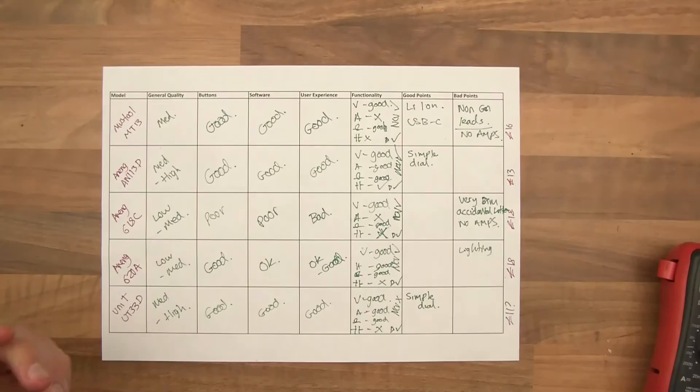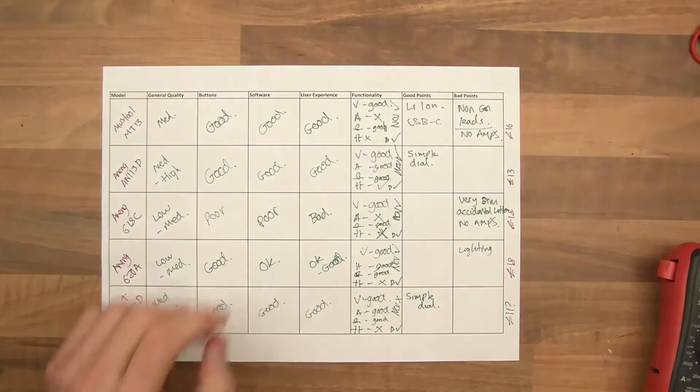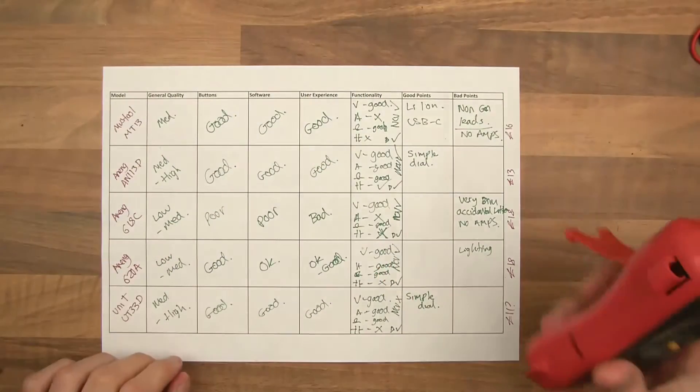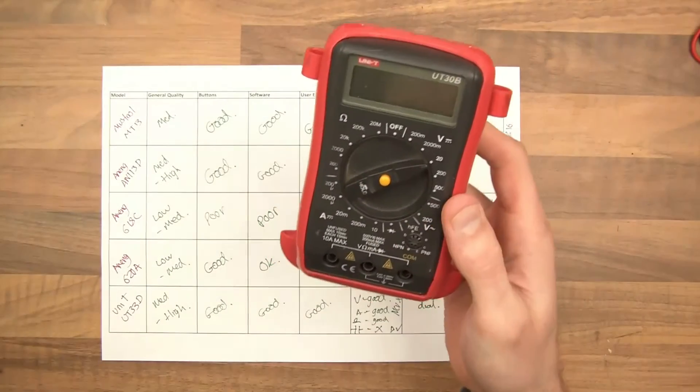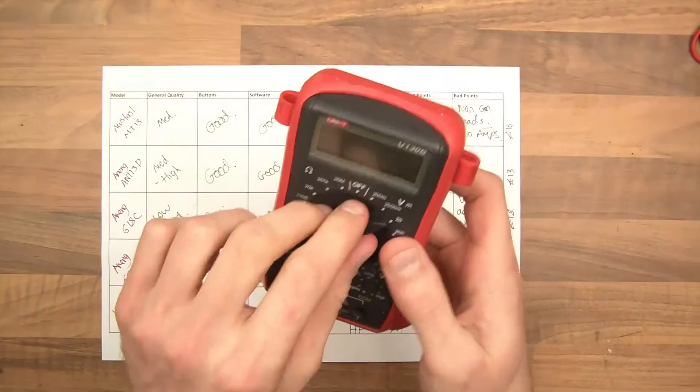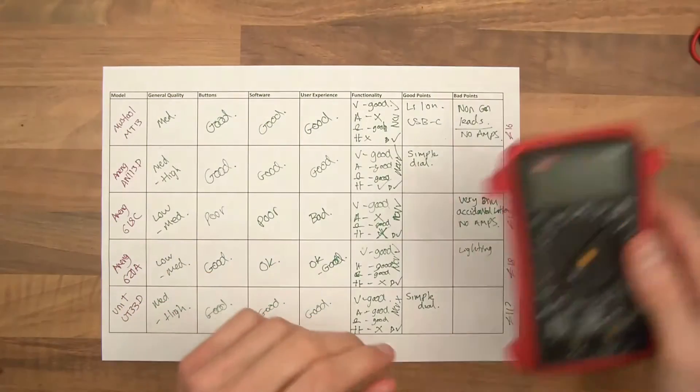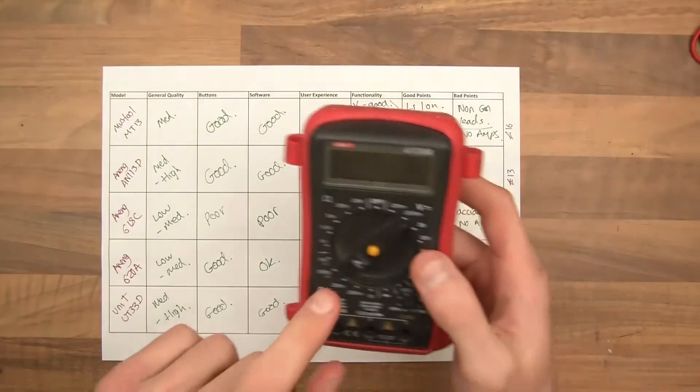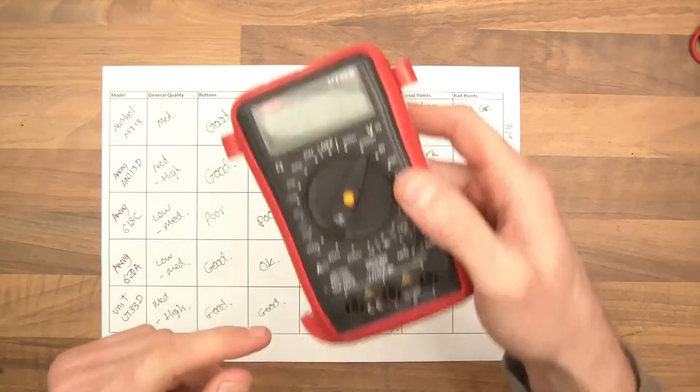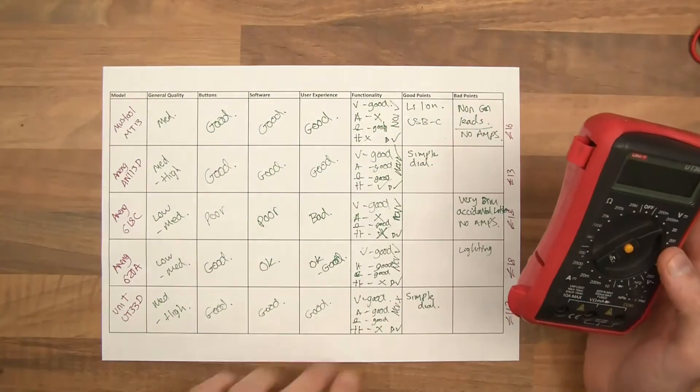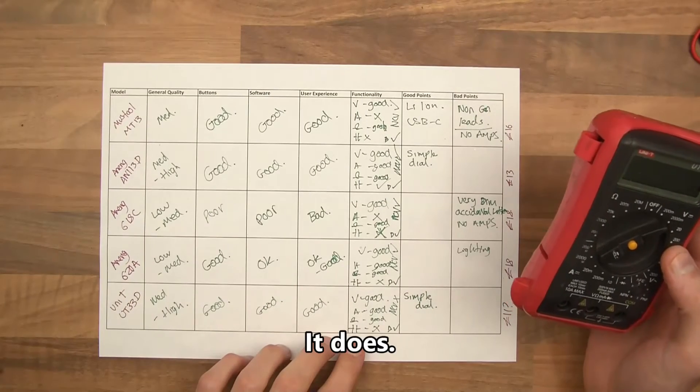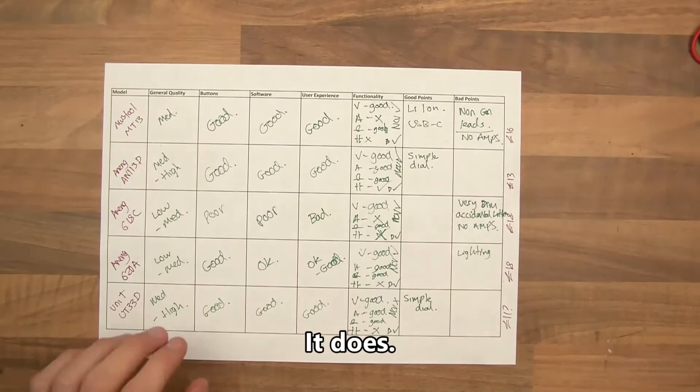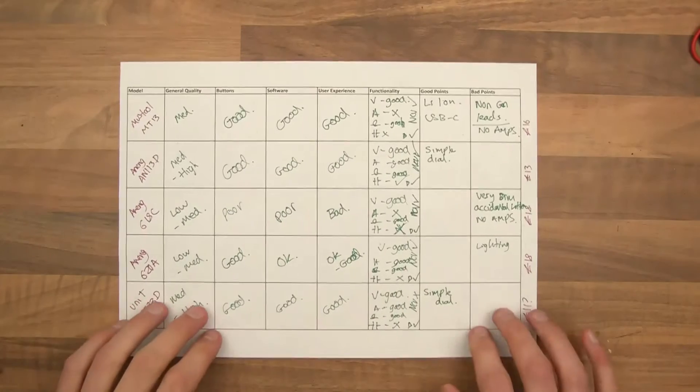But the UniT-UT33D has this manual range thing. We have to select the range. Of course, the other ones, this one doesn't. It's auto-ranging. And all the rest are auto-ranging as well. But in terms of quality, this is medium to high quality. The buttons are really simple. The same as the AN113D. The new one of these does have NCV, which is non-contact. I'm not sure if it has capacitance. But still, it's a very good quality one, especially for around about £11.